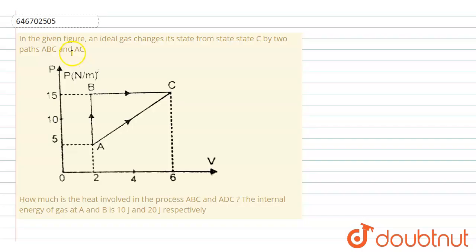In this question, an ideal gas changes its state from state A to state C by two paths: ABC and AC. We have to find how much is the heat involved in the process ABC.